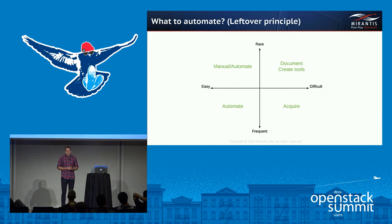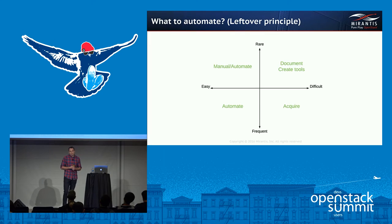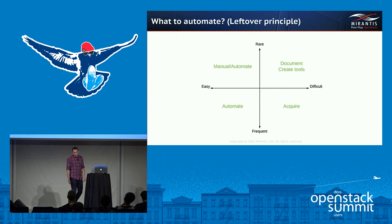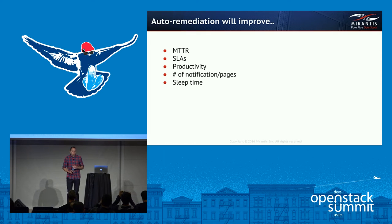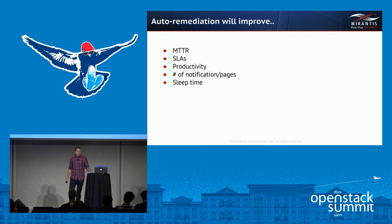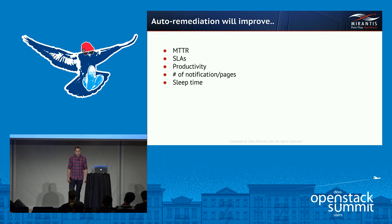Things that happen rarely but are also easily automatable, we should also do at some point. For rare and difficult cases, I suggest creating assisted troubleshooting tools that will help you resolve outages quicker. Auto-remediation has its profits: you'll decrease your MTTR — mean time to repair — resolve outages quicker or even prevent them, improve your SLAs, increase engineer productivity, reduce the number of notifications and pages, and improve sleeping time. As a father of a little baby, that's the crucial one for me personally.